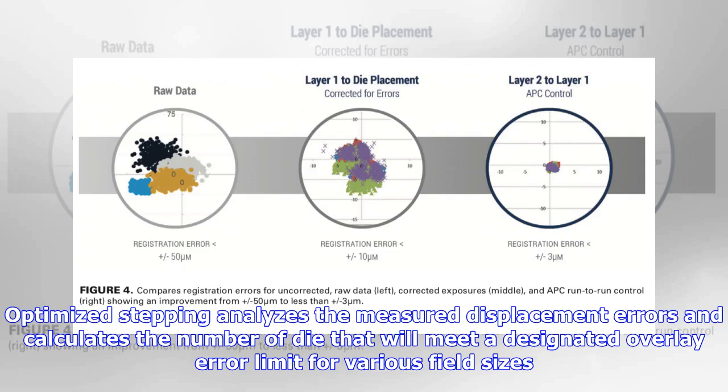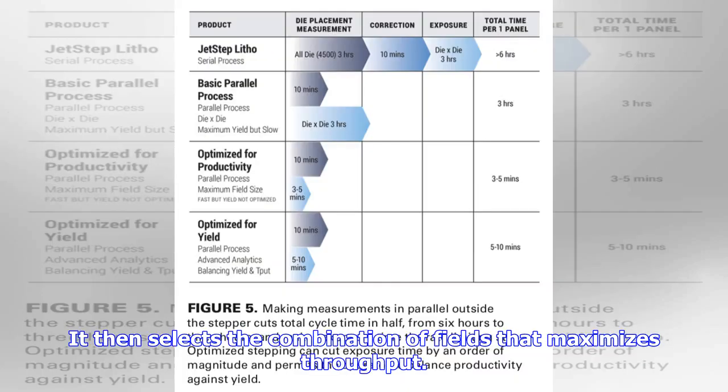Optimized stepping analyzes the measured displacement errors and calculates the number of die that will meet a designated overlay error limit for various field sizes. It then selects the combination of fields that maximizes throughput.